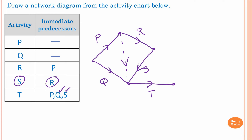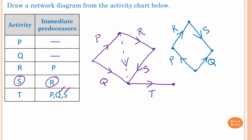That is the network for this activity chart. Of course, your diagram may look different from mine — just make sure the directions are correct. Even better, if we redraw: Activity P, Activity Q, then Activity R directly after P, Activity S, and Activity T with a Dummy Activity. This is a better diagram. Sometimes you have to draw a rough version first to get everything right, then redraw to make it look cleaner.